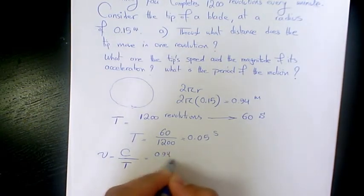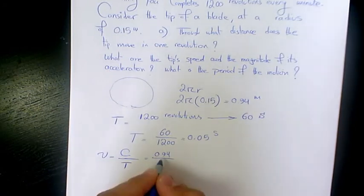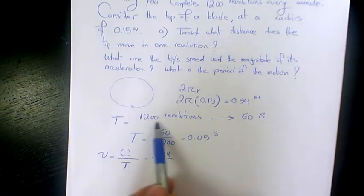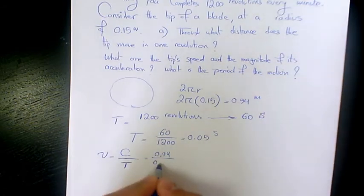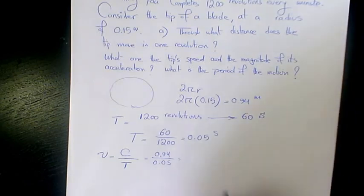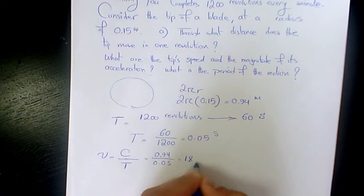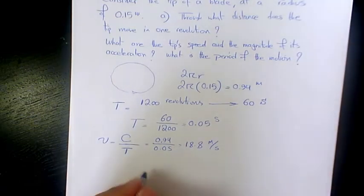We found that the period is 0.05, so it's 0.94 divided by 0.05. That will be 18.8 meters per second.